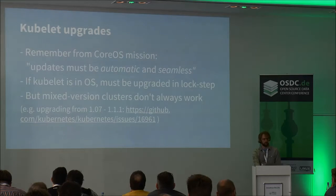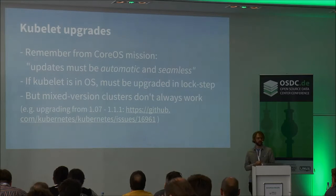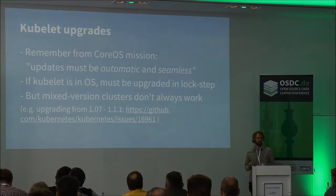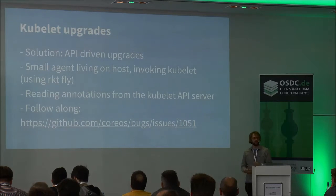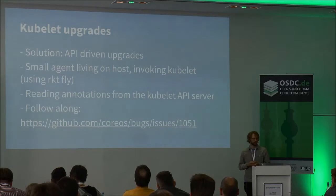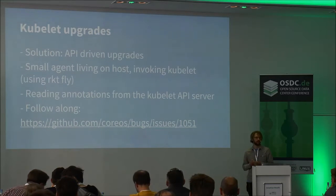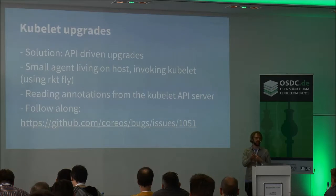One final thing I want to touch on is kubelet upgrades, something we're working on at the moment. With CoreOS we want updates to be seamless. If the kubelet was baked into the OS, an OS upgrade might update the kubelet — in principle fine since Kubernetes emphasizes backwards compatibility, but we found some backwards incompatibilities in practice when having a mixed version cluster. That was one of our motivations for running the kubelet in a container. But you still need a solution for upgrading kublets in a live cluster. Our plan is API-driven upgrades where you note an annotation on a Kubernetes node using the Kubernetes API, and that annotation specifies what version of the kubelet is actually running on that node.